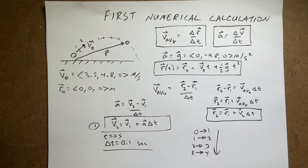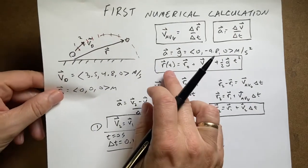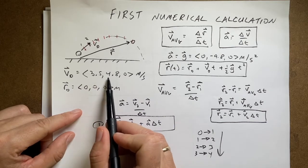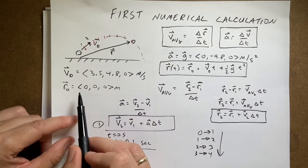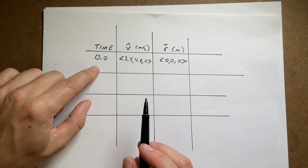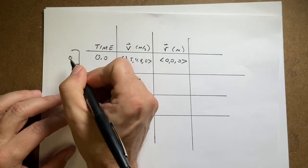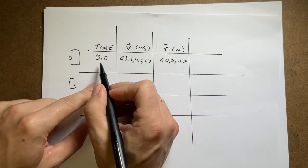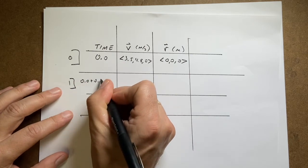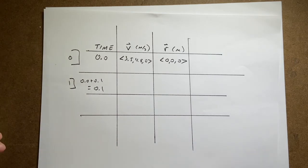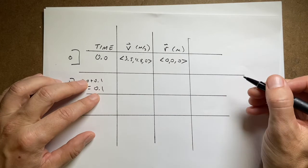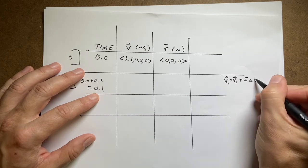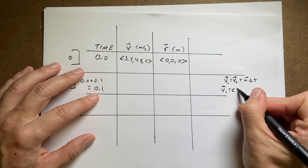I've made a little chart. I'm starting with initial velocity (3.5, 4.8, 0) meters per second and initial position (0, 0, 0). Step 0 is time 0, velocity 0, position 0. For time 1: 0.0 + 0.1 = 0.1 seconds. To find the new velocity: v1 = v0 + a * delta_t, which is (3.5, 4.8, 0) + (0, -9.8, 0) * 0.1.